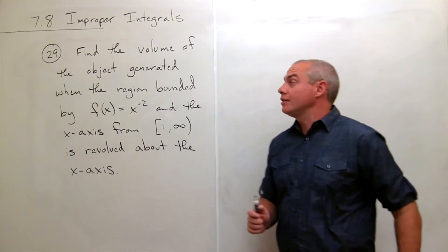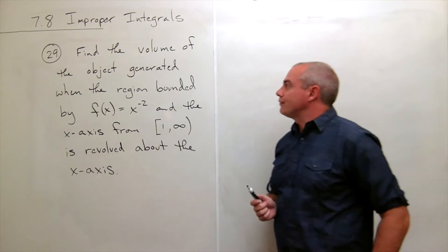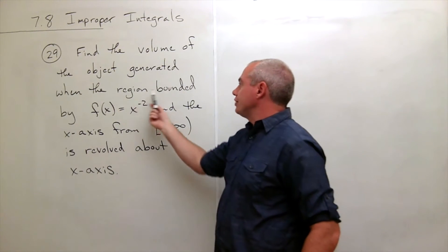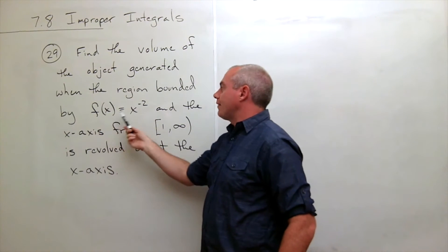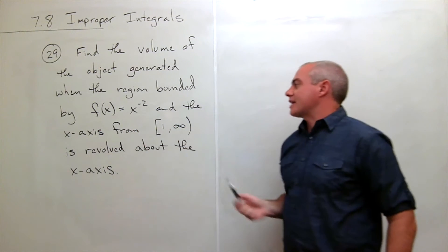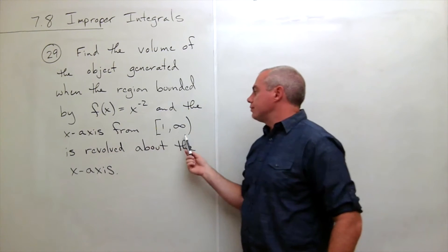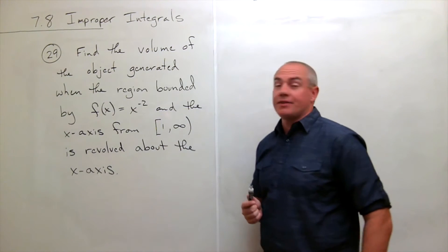In problem number 29, we'd like to find the volume of the object generated when the region bounded by f of x equals x to the minus 2 and the x-axis from 1 to infinity is revolved about the x-axis.